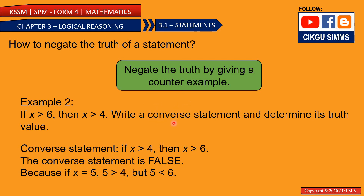Remember that for a converse statement, you need to reverse the position — P→Q becomes Q→P. So if X greater than 6, then X greater than 4 becomes: if X greater than 4, then X greater than 6. This is your converse statement. Then you need to determine its truth value.